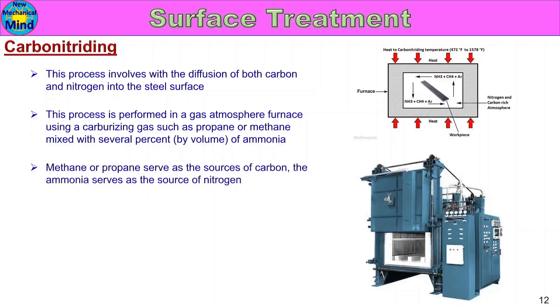Methane or propane serve as the source of carbon. The ammonia serves as the source of nitrogen — methane or propane supply carbon diffusion, ammonia gas supplies nitrogen diffusion into the metal surface.